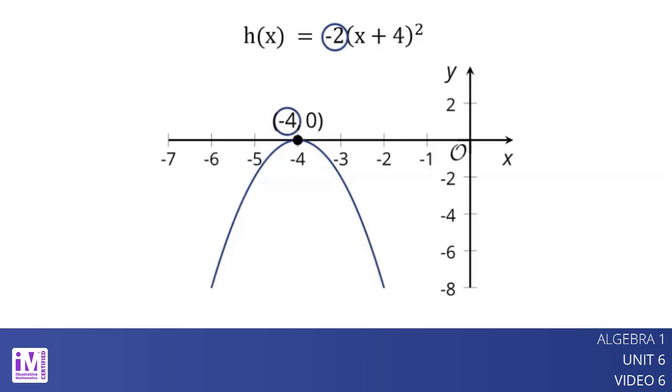For any other value of x, the function is less than 0 because it will be a positive value multiplied by negative 2. This means that the function h has its maximum value when x equals negative 4. This reasoning also shows why a negative coefficient here makes the parabola open downwards.